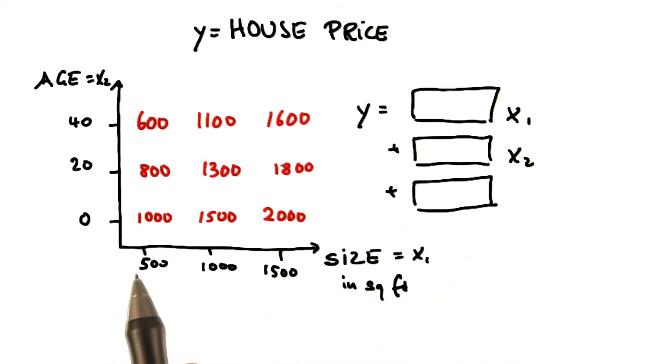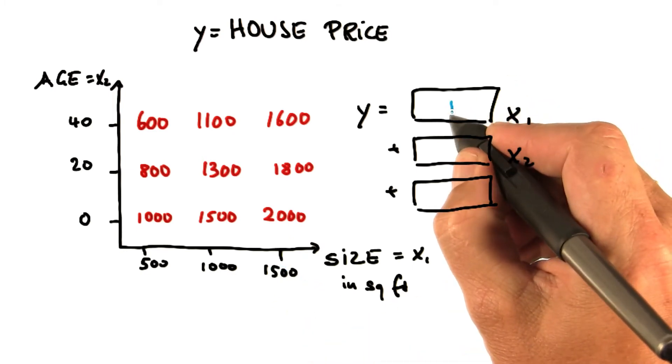But we're going to find that as we increase our size by 500 feet, from 500 to 1,000 or 1,000 to 1,500, the price also increases by 500. So that means the ratio of price increase to size increase is 1, and that goes in over here.